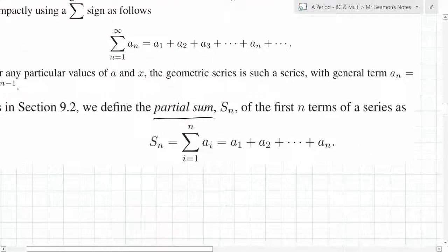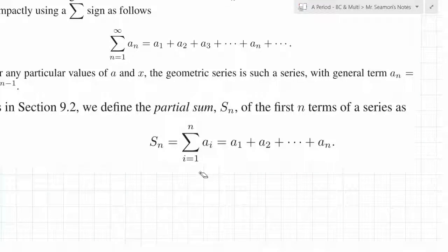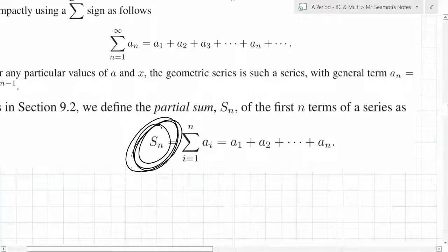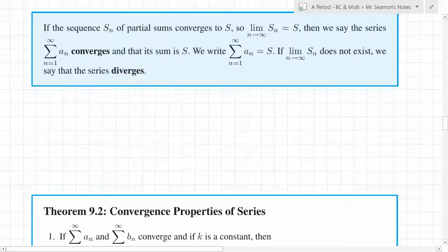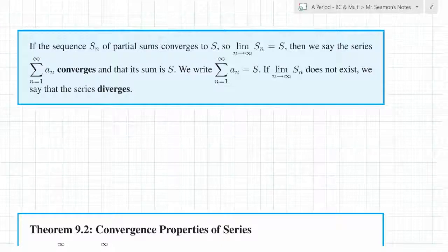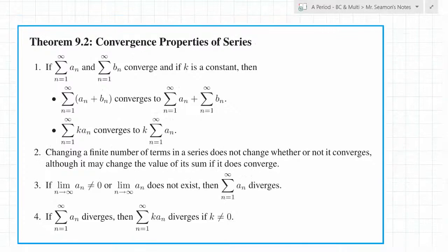We've actually already looked at this. A partial sum — the only difference between this and an infinite sum is that it ends. So we look at the sequence of partial sums, and if that converges, we know that the series converges. A sequence is just a number, a number, a number. A series is adding them — an infinite series is adding them all together. The technical definition: if the sequence S_n of partial sums converges to S, meaning the limit as n goes to infinity of S_n equals S, then we say the series converges. If it doesn't, it diverges.